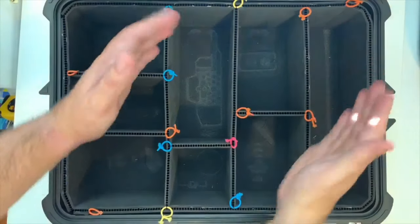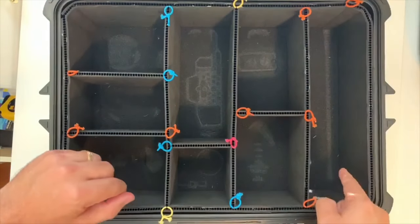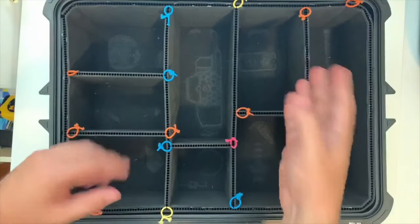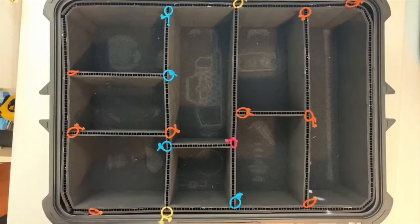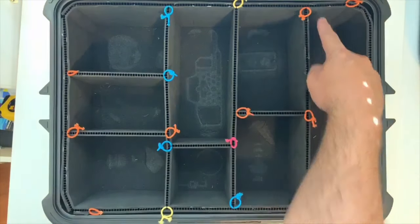Now, good practice on how you're going to set up your dividers is laying your equipment in the case. Start measuring the dividers. Make sure to put your outer rim first so you can measure from point A to point B.